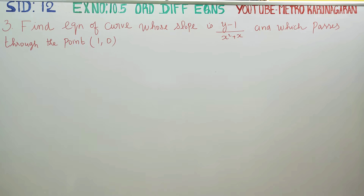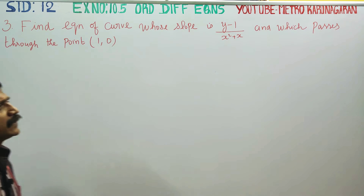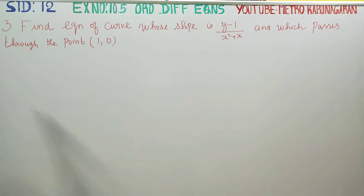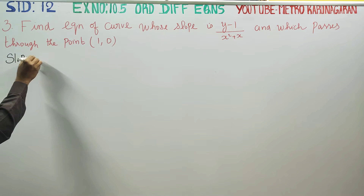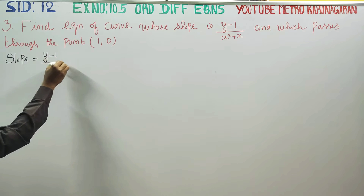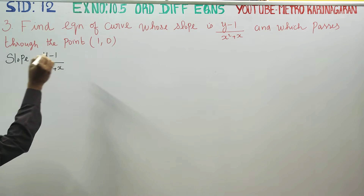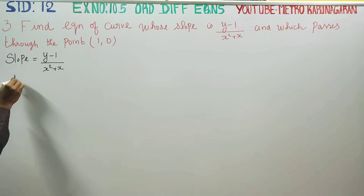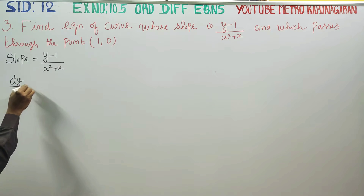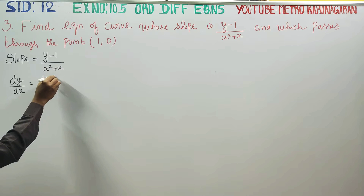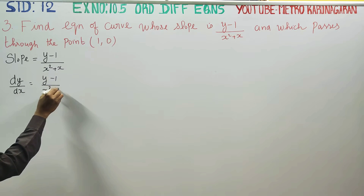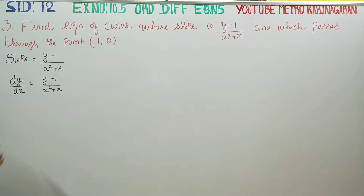Dear 12th standard students, in exercise number 10.5, sum number 3: find the equation of the curve whose slope is (y minus 1) by (x squared plus x). Slope means differential dy by dx is equal to (y minus 1) by (x squared plus x). I am going to use the method called variable separable.